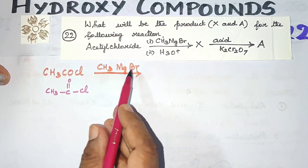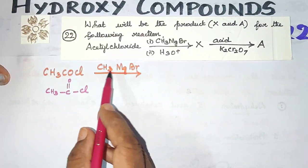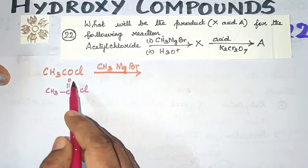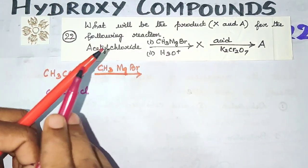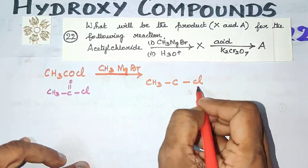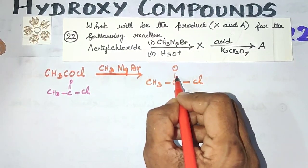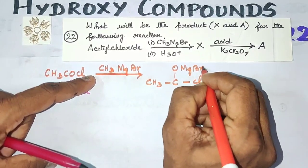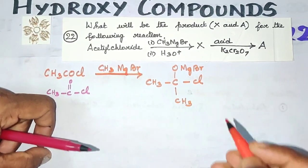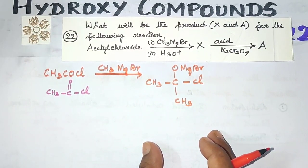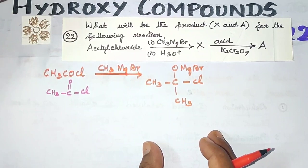In CH₃MgBr, the Grignard reagent, the methyl carbon and MgBr come in. The C=O double bond becomes a single bond. So the product we get is CH₃–C(Cl)(–)–CH₃ with MgBr attached. When the Grignard reagent is used with acetyl chloride, that is the first intermediate product we obtain.